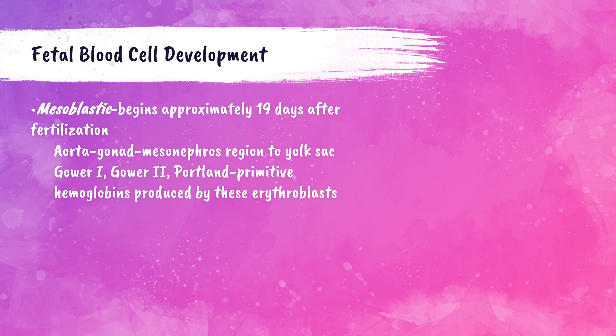There are some hemoglobins that only exist within the fetus. In this mesoblastic stage, hemoglobin Gower 1, hemoglobin Gower 2, and hemoglobin Portland are produced. You don't need to know the inner workings of these hemoglobins — just know that they are produced in this stage. We'll talk more about hemoglobins in upcoming lectures.